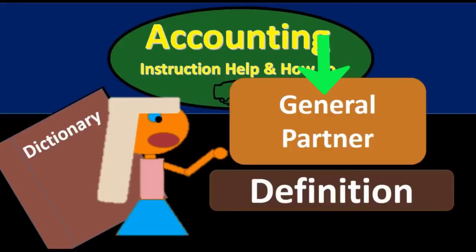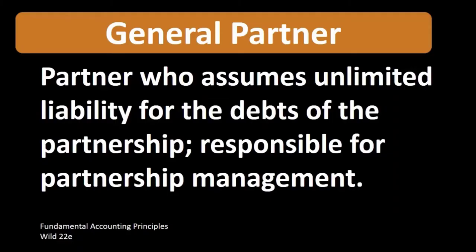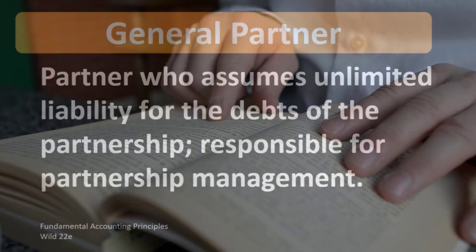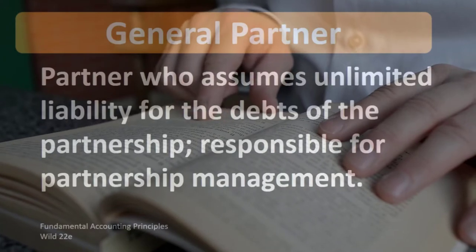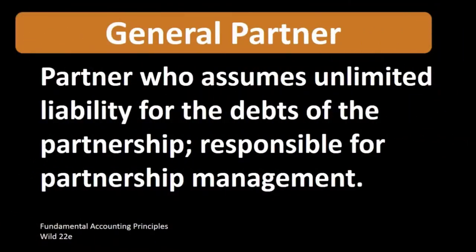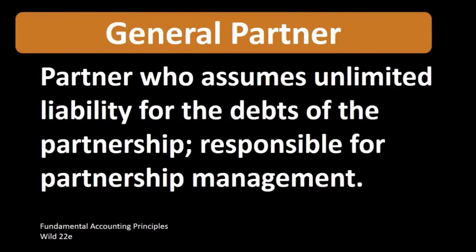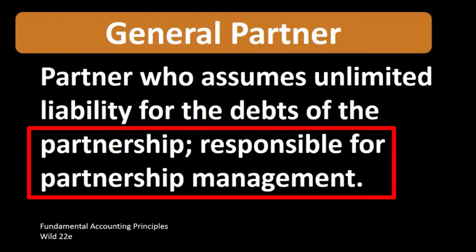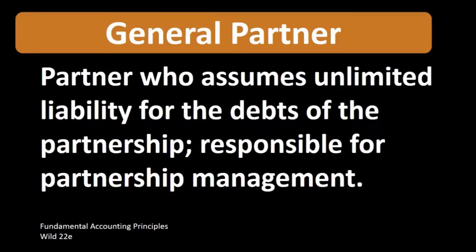In this lecture we will define general partner according to Fundamental Accounting Principles, Wild 22nd edition. A general partner is a partner who assumes unlimited liability for the debts of the partnership and is responsible for partnership management.